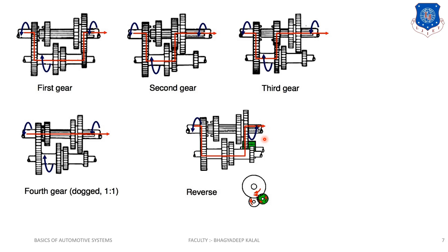It is called sliding because the gears slide over the main shaft — that is why it is known as a sliding gear. However, the mechanical efficiency is very low and noise levels are very high. Moreover, the driver requires considerable skill to change gears. That is why we use another type — the constant mesh gearbox — in which helical gears are used instead of spur gears to improve mechanical efficiency and reduce noise.